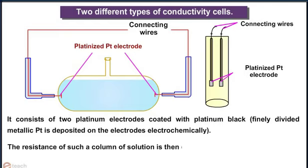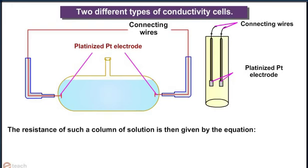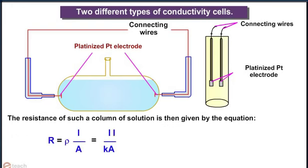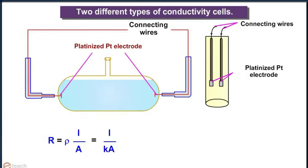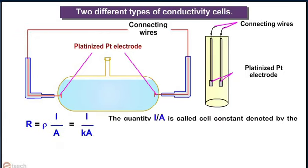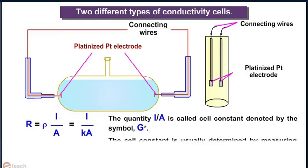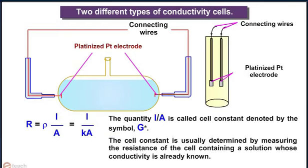The resistance of such a column of solution is given by the equation R = ρL/A = L/(κA), where L is separation between electrode and A is area of cross section. The quantity L/A is called cell constant denoted by the symbol G. The cell constant is usually determined by measuring the resistance of the cell containing a solution whose conductivity is already known.